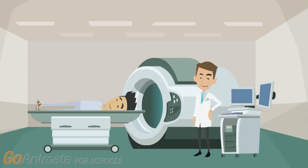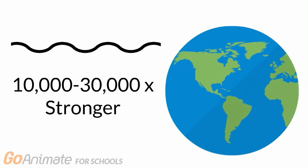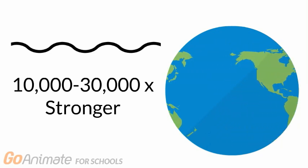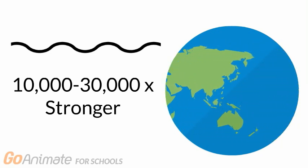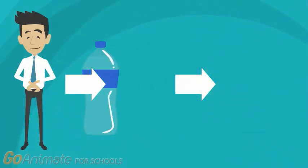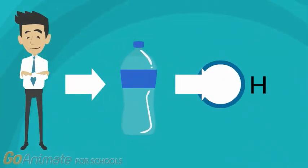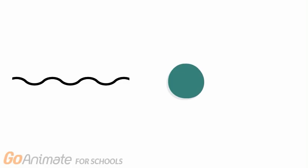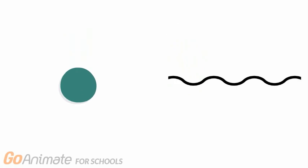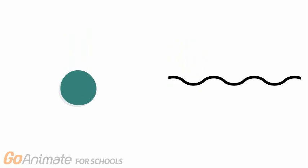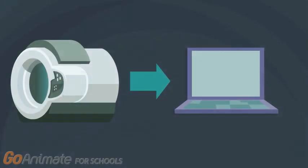When undergoing an MRI scan, a patient lies on a movable bed which is surrounded by the MRI scanner and a circular magnet. Radio waves 10,000 to 30,000 times stronger than the magnetic field of Earth are sent through the body. Our bodies are mainly composed of water, which contain hydrogen atoms. These waves cause the nuclei of the atoms to change position. As the nuclei move back into their original positions, they emit their own radio waves, which the scanner picks up and ultimately turns into a picture seen on a computer.